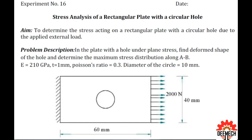Hello viewers, welcome to DMEK. This is Deeksit Kumar and you're watching CISA lab tutorial. Let us solve experiment number 16: to determine stress acting on a rectangular plate with a circular hole. The given length is 60 mm, width is 40 mm, and the hole diameter is 10 mm.